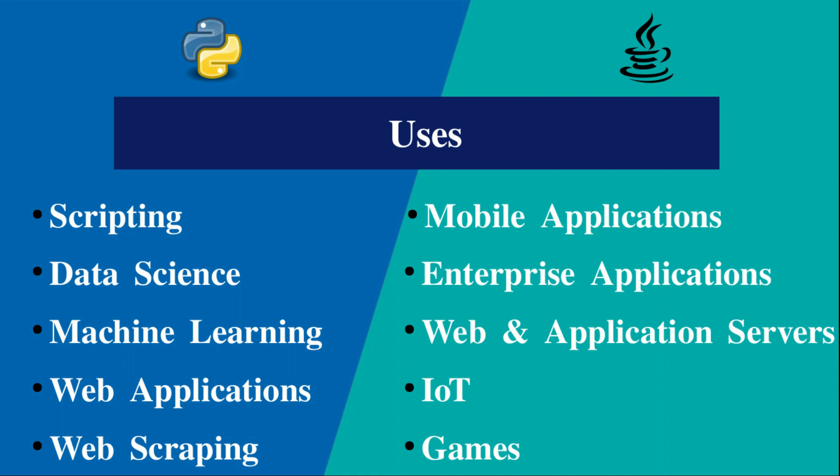So we have covered the basic similarities and differences of Python and Java. Python is used for data science, machine learning, and blockchain applications. Please leave any doubts in the comments. I'll see you in the next video. Bye.